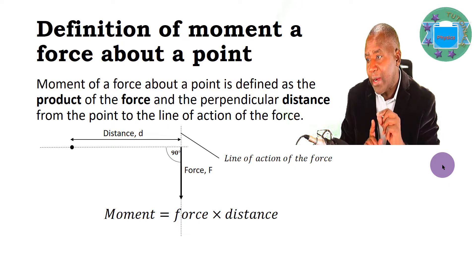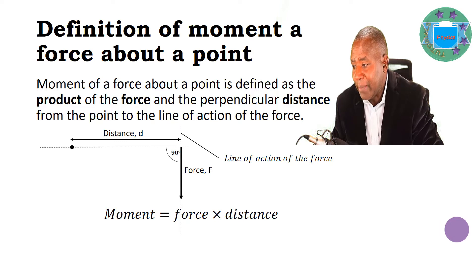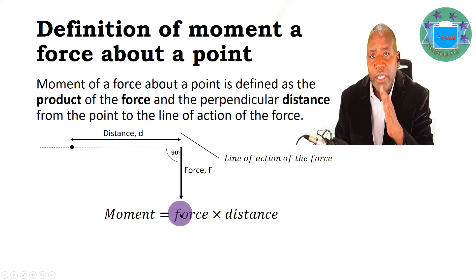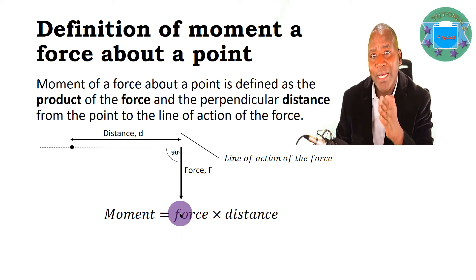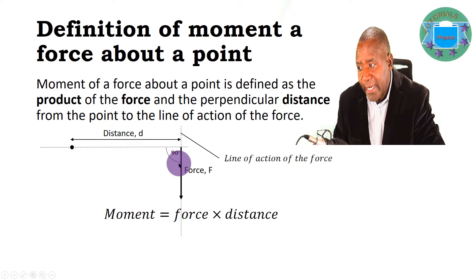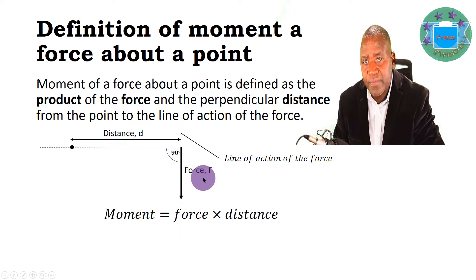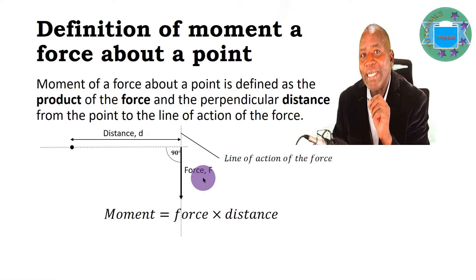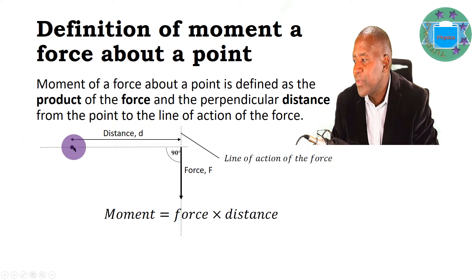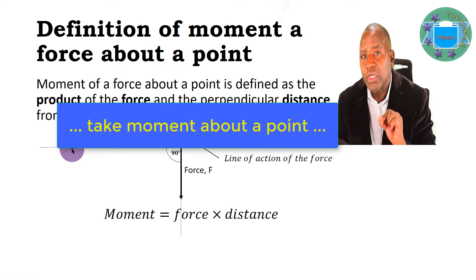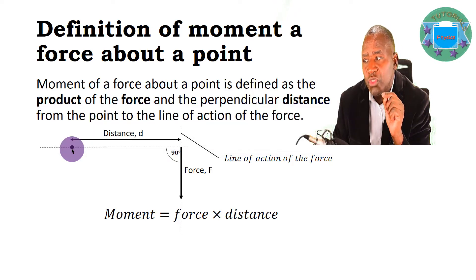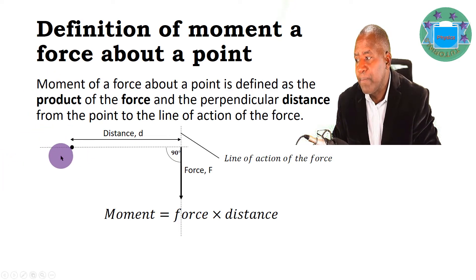There are several points to describe here. First, a force is a vector and it has a certain direction — that direction is referred to as its line of action, shown by the dotted line. When we talk about moment, we always take moment about a given point, so we have to identify the point about which we are taking moments. The proper language to use is: take moment about a point. There must always be a point about which we are taking moments.